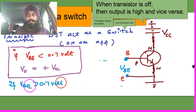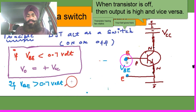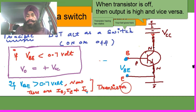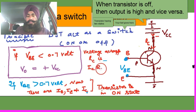Now if the forward biasing is given between the base and emitter, and some voltage greater than 0.7 volts is applied, then the transistor becomes on. There will be emitter current, base current, and collector current. The collector current will flow and the transistor is on. When the collector current flows, it passes through RC and a voltage is established.